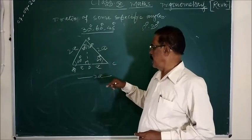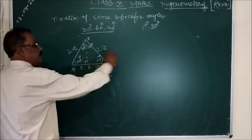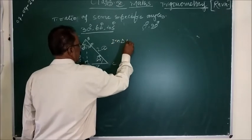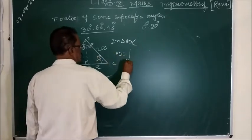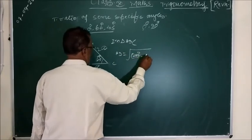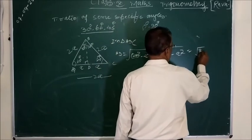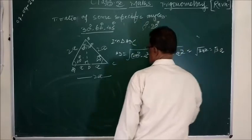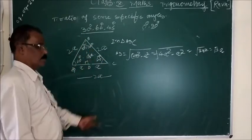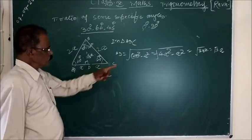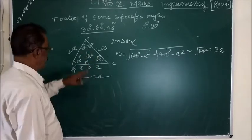Now consider triangle ADC. In triangle ADC, you find the altitude AD by using the Pythagoras theorem. So AD squared will be 2A whole squared minus A squared. This will be 4A squared minus A squared, equal to 3A squared. Under root of 3A squared means we will get under root 3 times A. So this side AD is under root 3A. Now we know all three sides: A, 2A, and root 3A.